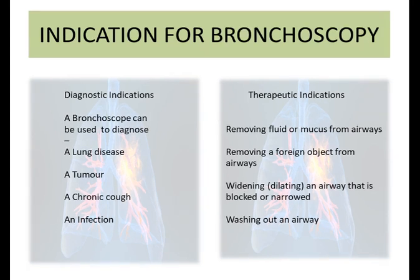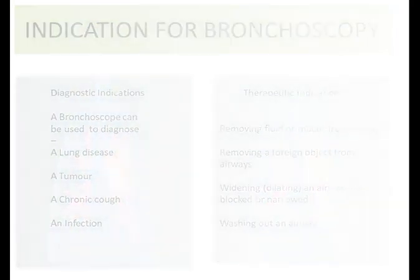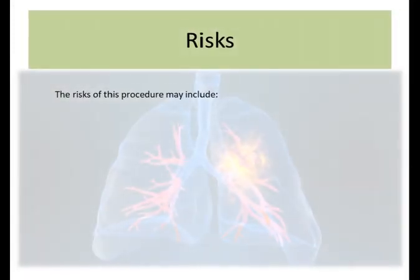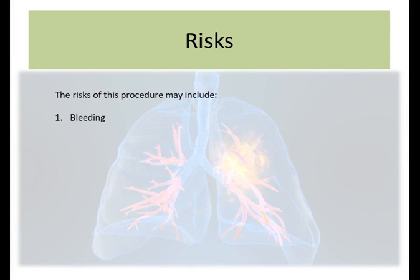After knowing the indications for bronchoscopy, we move to identifying the risks present in the performance of bronchoscopy. Here is a short list of the risks. First is bleeding. If I am inserting an instrument into the respiratory system, it might happen that unintentionally I am hurting some structures, injuring some structures, causing bleeding.